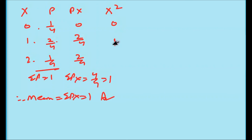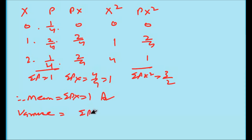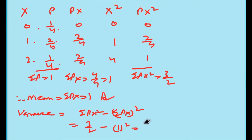For variance, we first find x²: 0²=0, 1²=1, 2²=4. Then px²: (1/4)×0=0, (2/4)×1=2/4, (1/4)×4=1. So sigma px² equals 0 + 2/4 + 1 = 3/2. Using the variance formula: variance = sigma px² minus (sigma px)² = 3/2 minus 1² = 3/2 minus 1 = 1/2.